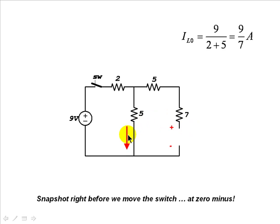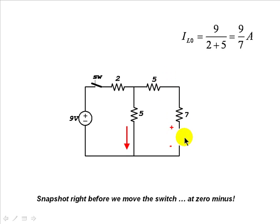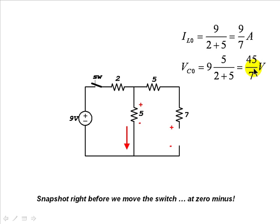This current is easy to find: nine volts divided by two plus five equals nine-sevenths of an amp — that is IL(0). The current in the capacitor branch is zero amps, so the voltage across the seven-ohm resistor is zero and across the five-ohm resistor is also zero. VC(0) is simply the voltage divider result: nine times five divided by seven, which equals forty-five-sevenths of a volt.